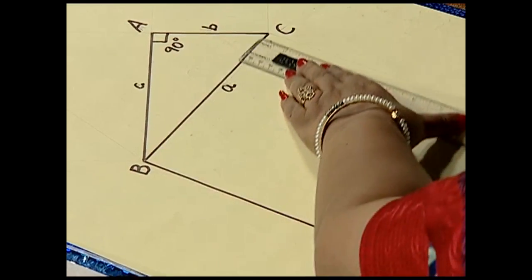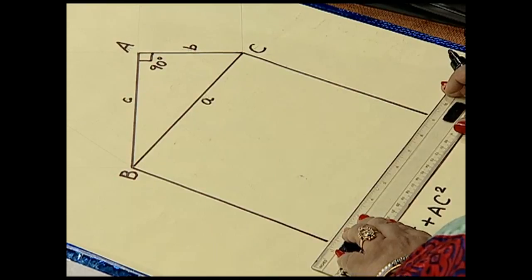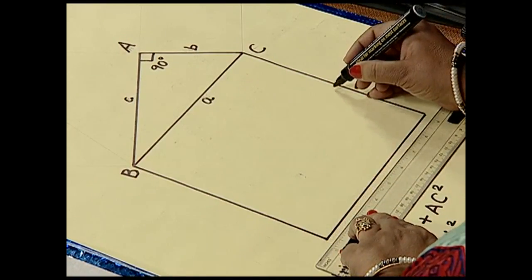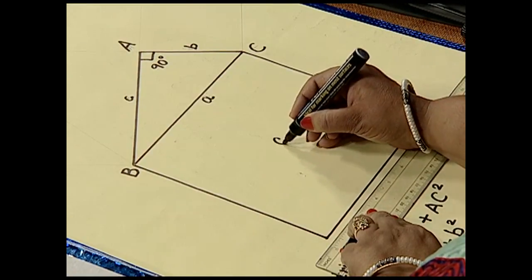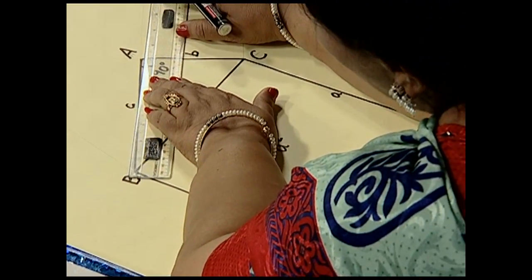Along BC of length a, so we construct this square and you can see here that this square is of area a². Similarly, we construct squares.